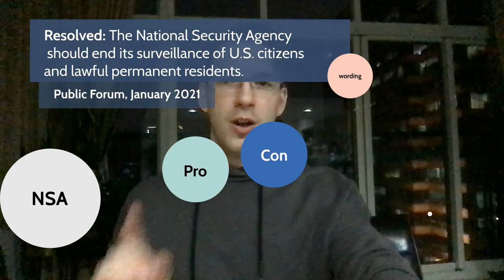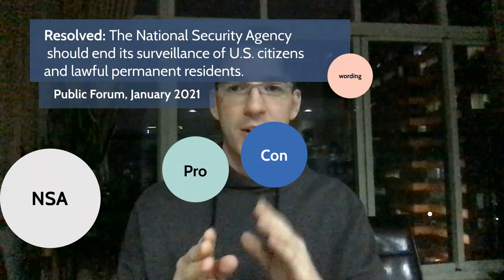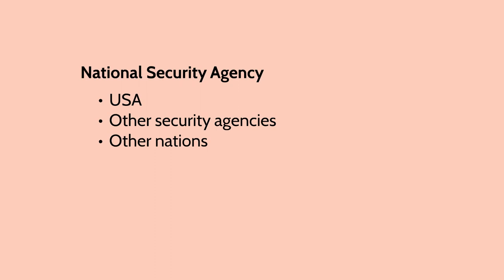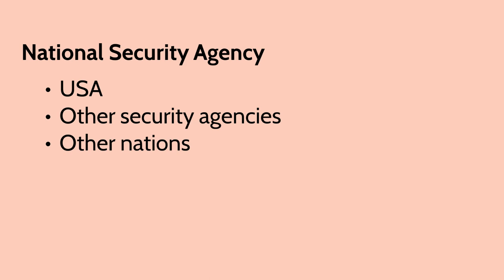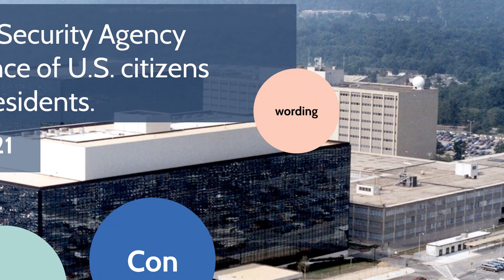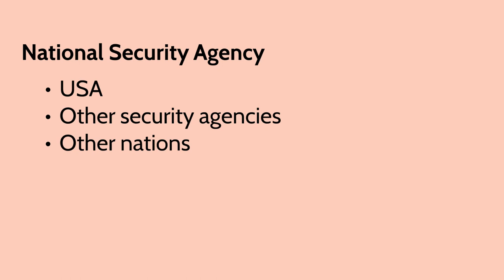So let's begin. Once again, the resolution reads: the National Security Agency should end its surveillance of U.S. citizens and lawful permanent residents. First, on wording: the National Security Agency refers to the NSA from the United States. There are other countries that also have NSAs — they don't apply unless you're making a meme or tricks case, which you shouldn't. This does not apply to other security agencies. So we say the NSA should end its surveillance of U.S. citizens, but we don't say the FBI has to stop, the CIA has to stop, local police agencies have to stop.